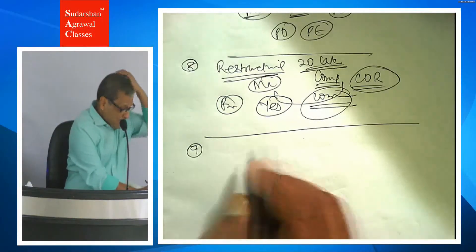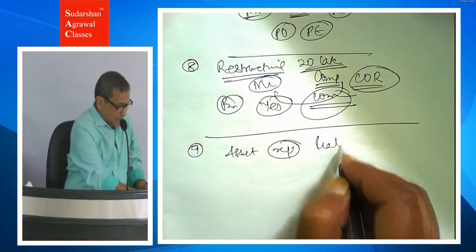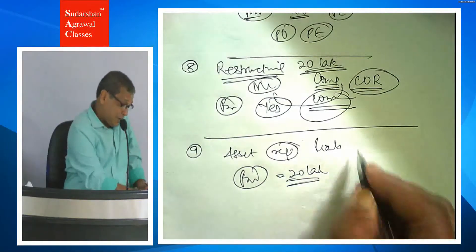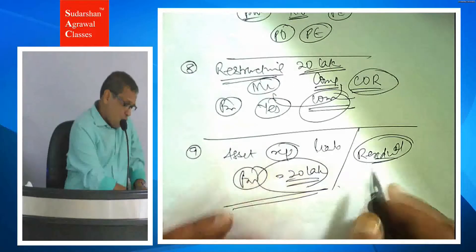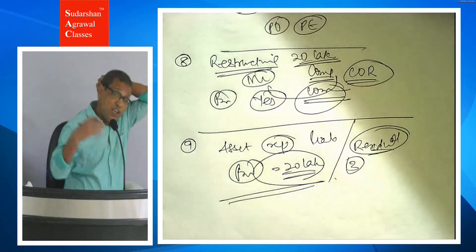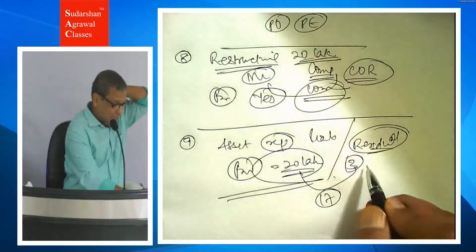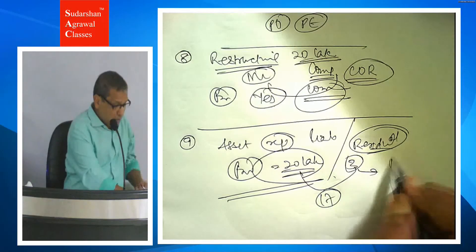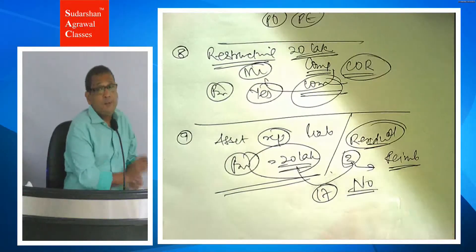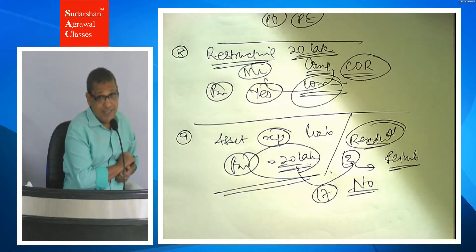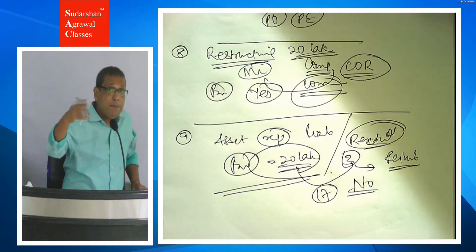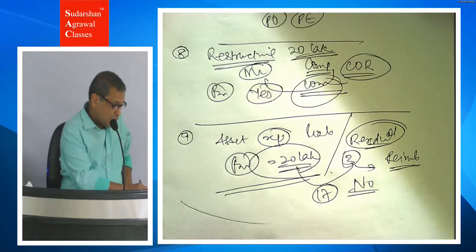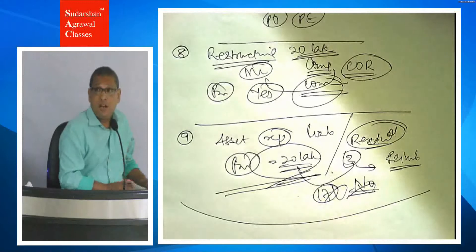Next point: suppose I have a liability to repair an asset and I am going to make a provision of 20 lakh rupees. I also expect that after repairing this asset, its residual value (scrap value) will increase by 3 lakh rupees. Can I make the provision for only 17 lakh, treating the 3 lakh increase in expected disposal value as reimbursement? The answer is no. Expected gain in the disposal value of any asset is not considered while measuring the provision. You can revise the scrap value when computing depreciation — that is fine — but as far as provision is concerned, the full 20 lakh provision will be made, not 17 lakh.